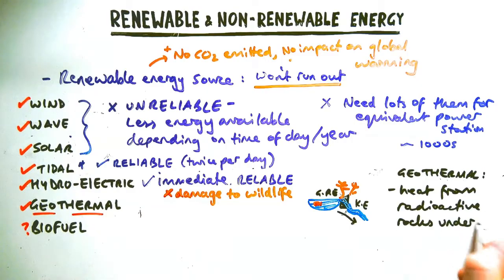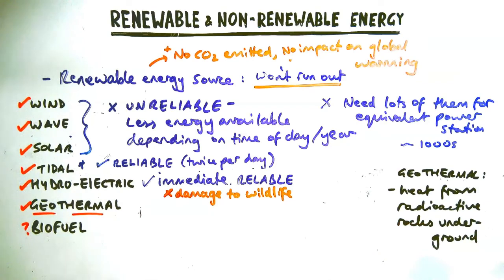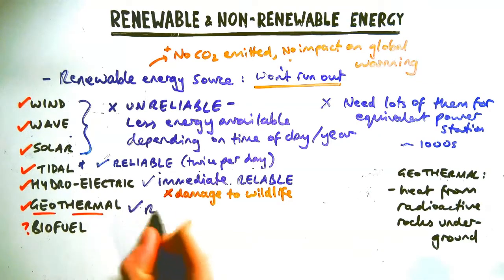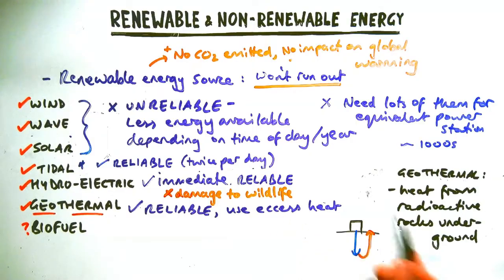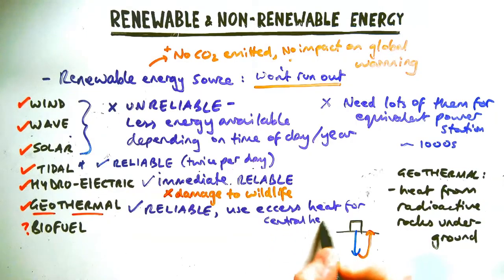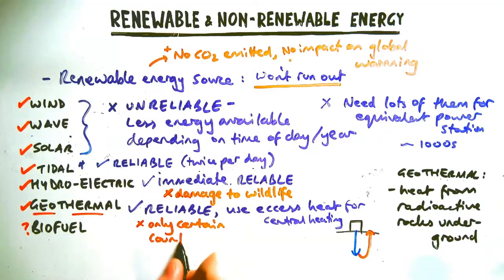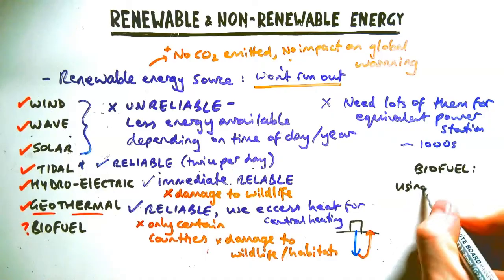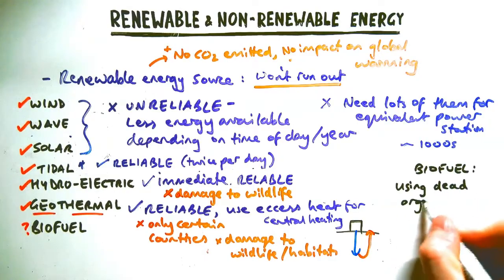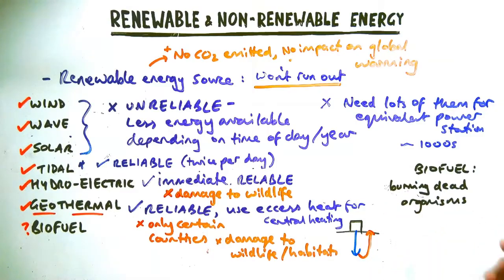Geothermal — the clue is in the name: 'geo' relates to earth, 'thermal' to heat. In certain parts of the world, you use heat from radioactive rocks and geological activity underground to heat water, make steam, and generate electricity. It's pretty reliable since the earth is always going to be hot. You can also use the extra heat for central heating in nearby villages or towns. The downside is you won't find this in the UK — it's found in places like Canada and Iceland where there's significant geological activity. It can also cause some damage to wildlife or habitats.